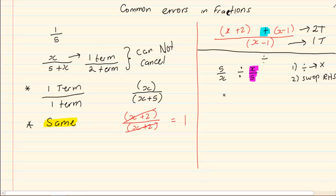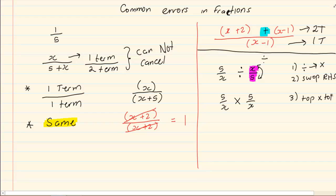So for this answer, we change division to multiplication and swap the right hand side, giving us 5 over x times 5 over x. Now you can cancel if they are the same — in this case they are not. So we multiply top with top and bottom with bottom. 5 times 5 is equal to 25, over x times x which is equal to x squared.